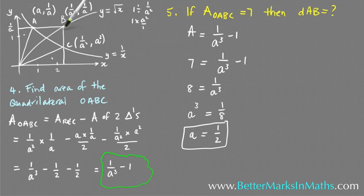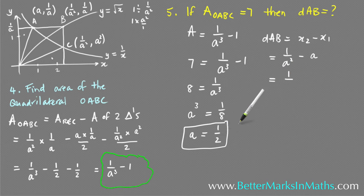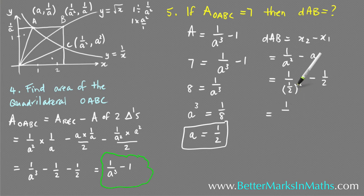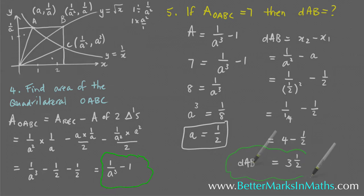So a equals 1/2. Distance AB is a horizontal line, so it's the x value at B minus the x value at A. The x value at B is 1/a², and the x value at A is a. Substituting a = 1/2: x at B is 1/(1/2)² = 1/(1/4) = 4, and x at A is 1/2. So distance AB = 4 minus 1/2 = 3 and a half. That's the distance AB.